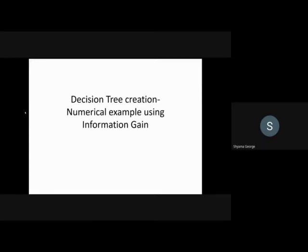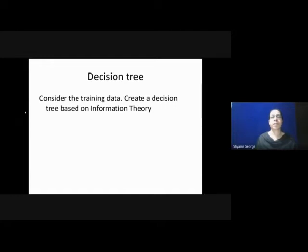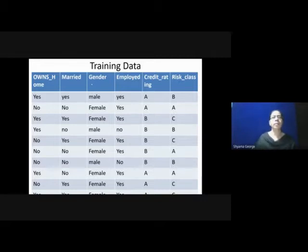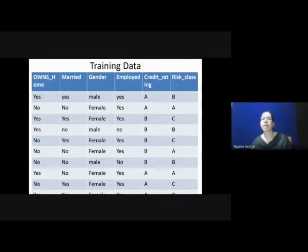We will see a decision tree creation using a numerical example. In this case, we are creating the decision tree using information gain. Consider the training data and create a decision tree based on information theory. This is the training data. The various fields are Ons, Home, Married, Gender, Employed, Credit Rating and Risk class. Here, Risk class is the class label.